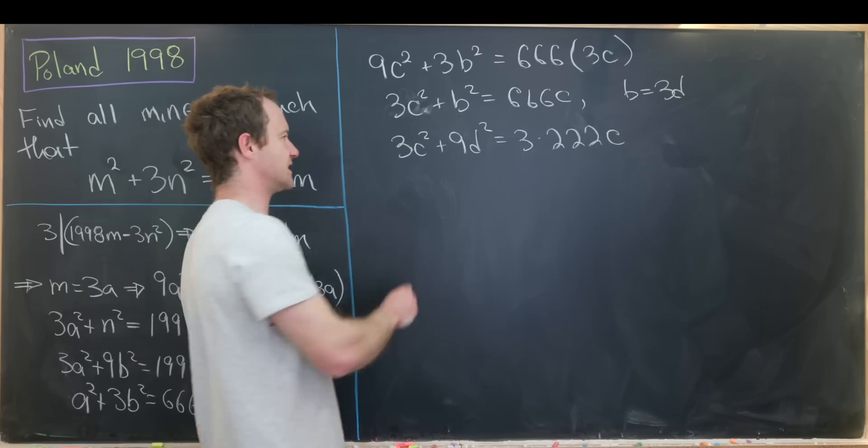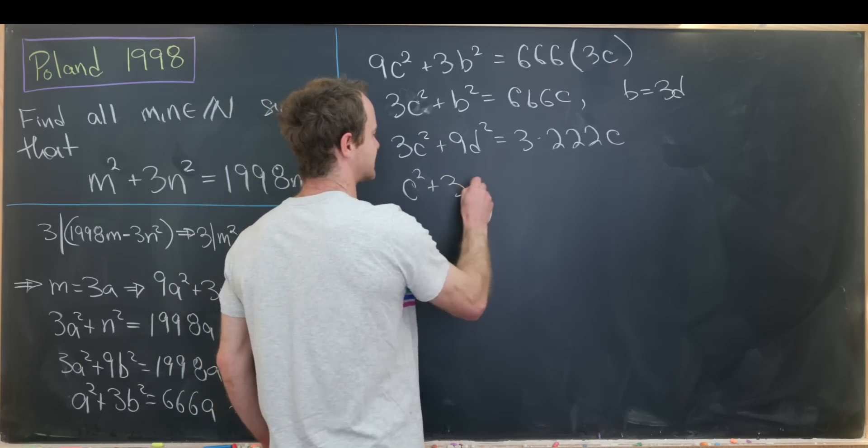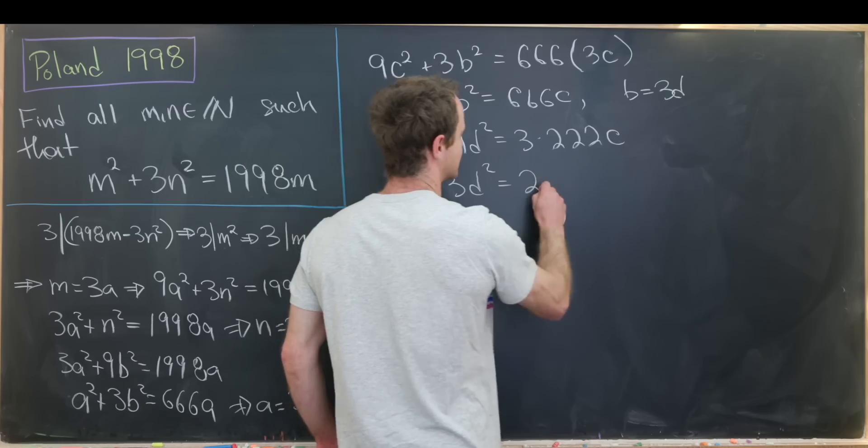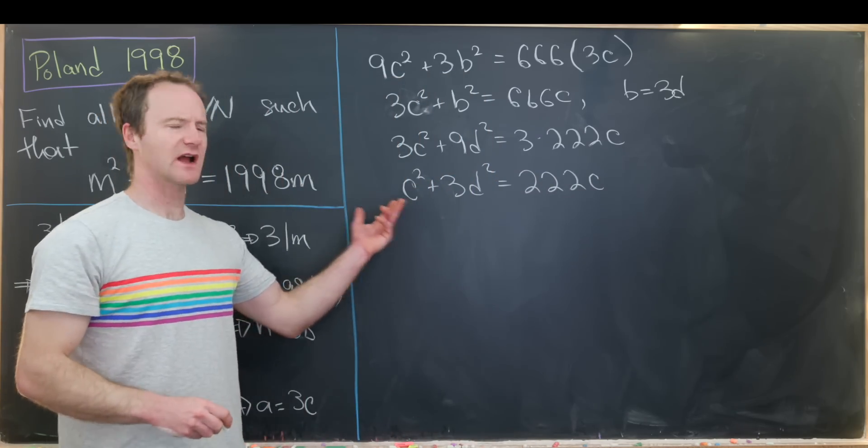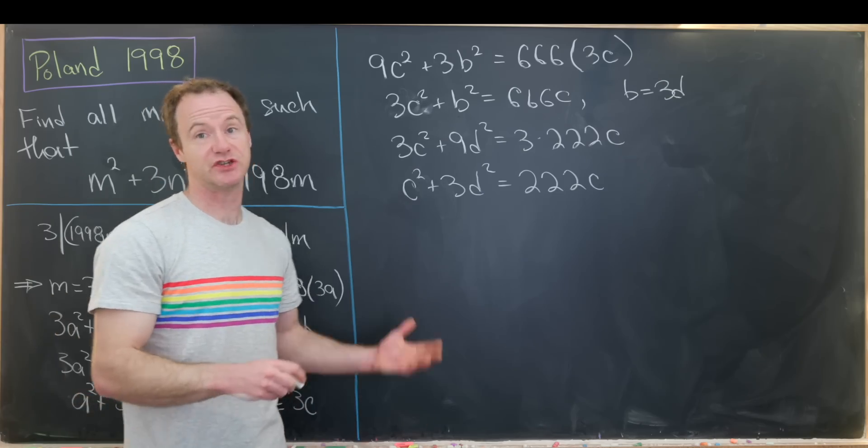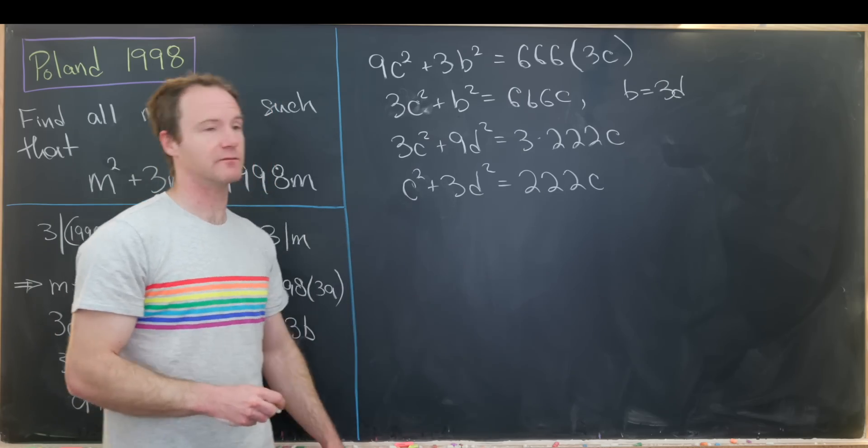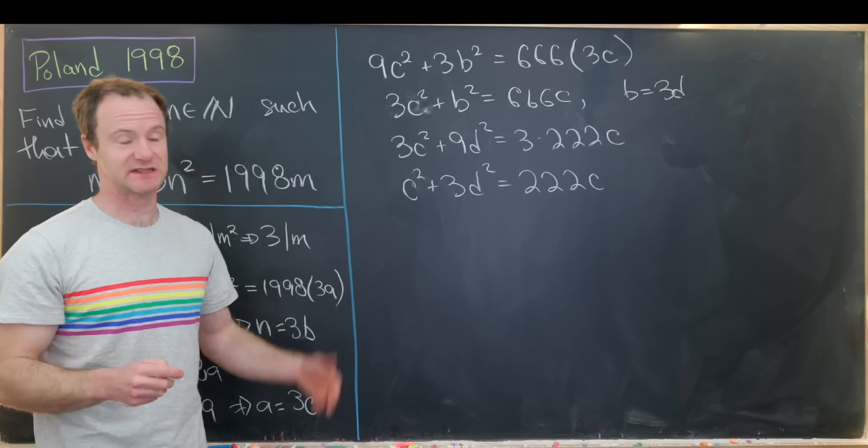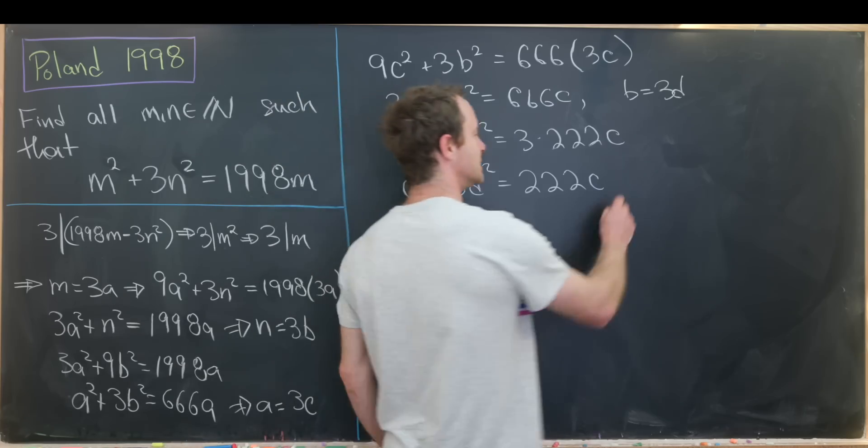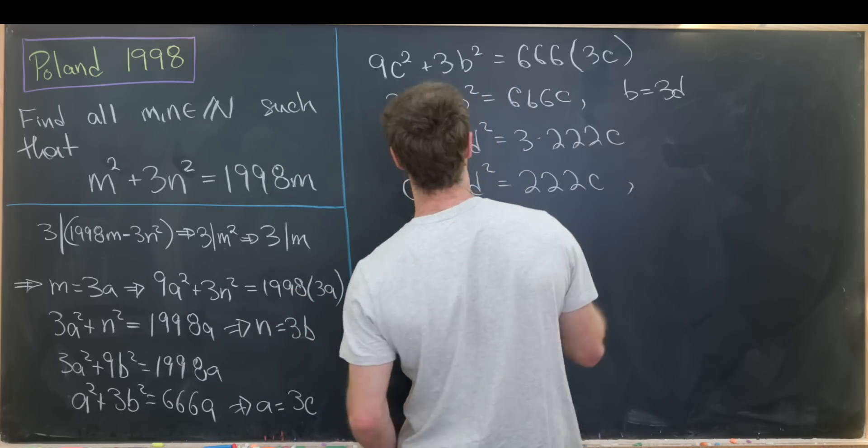But now we can cancel this out, leaving us with c squared plus 3d squared equals 222c. But we're kind of back into the original situation, just with a slightly different number here. And so instead of doing those two steps separately, let's do them the same.